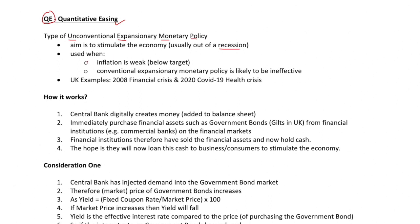QE is used when inflation is incredibly weak — way below target, with the target being 2% of CPI. Or it's used when you've exhausted all your conventional expansionary monetary policy tools, such as interest rates already being incredibly low, or when you anticipate that conventional tools are likely to be ineffective, so you need to use unconventional expansionary monetary policy.